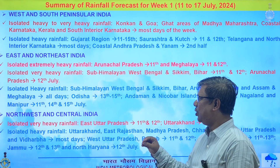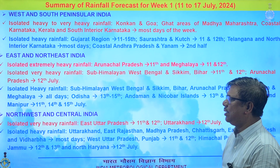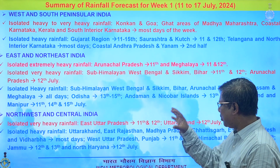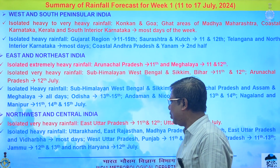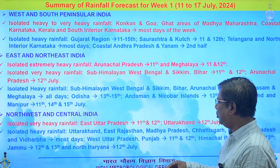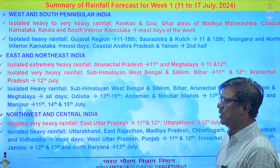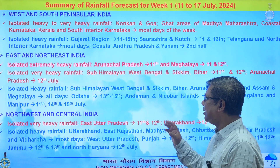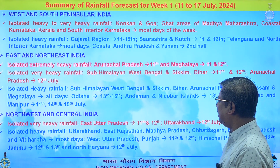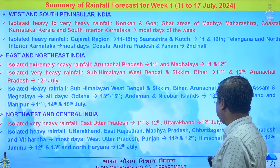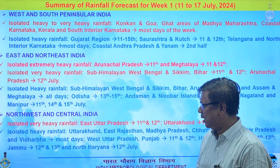For northwest and central India, isolated heavy rainfall is expected over Uttar Pradesh on 11th and 12th, Uttarakhand on 12th, and then isolated heavy rainfall over Uttarakhand, east Rajasthan, Madhya Pradesh, Chhattisgarh, east Uttar Pradesh, and Vidarbha on most days. Isolated heavy rainfall will also occur over west Uttar Pradesh and Punjab on 11th and 12th, Himachal Pradesh on 11th and 13th, Jammu and Kashmir on two days, and north Haryana on 12th.